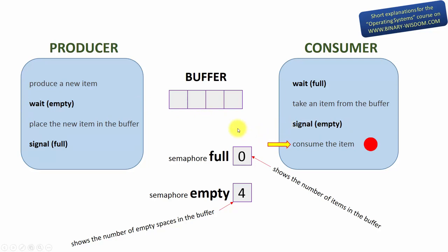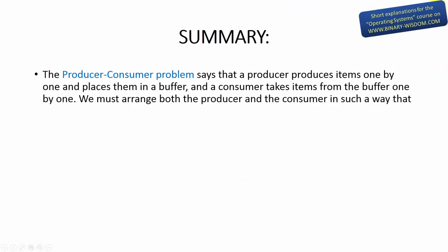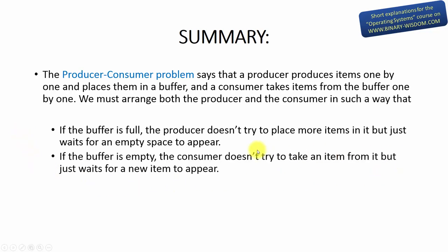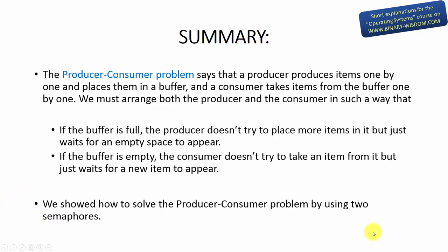That's one way to solve the producer-consumer problem. To recap: the producer produces items one by one and places them in a buffer, and the consumer takes items from the buffer one by one. If the buffer is full, the producer waits for an empty space to appear. If the buffer is empty, the consumer waits for a new item to appear. We showed how to solve the producer-consumer problem by using two semaphores. Thank you for being with us.